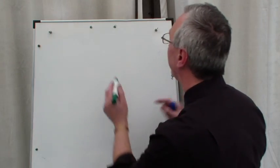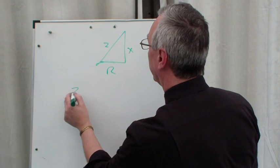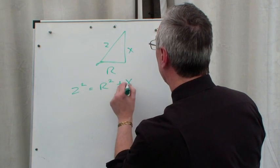How would we find, let's say we wanted to find r on its own? So z² = r² + x².